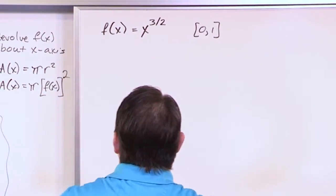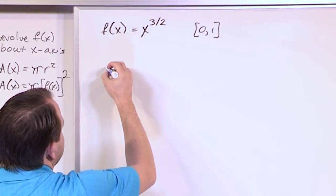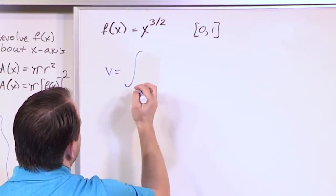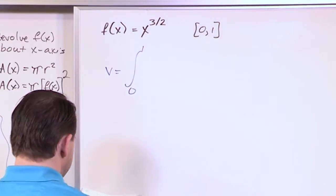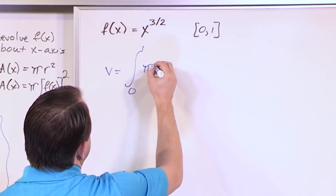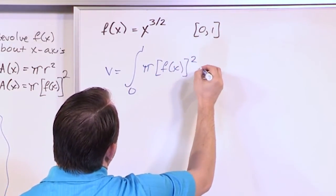And you're going to need to know how to set that up. You don't need to graph it. You don't really need to even know what it looks like, honestly, because you know that for the disk method, the volume is going to be the integral from zero to one, because that's the length or the extent of the object, times pi times f of x squared dx.